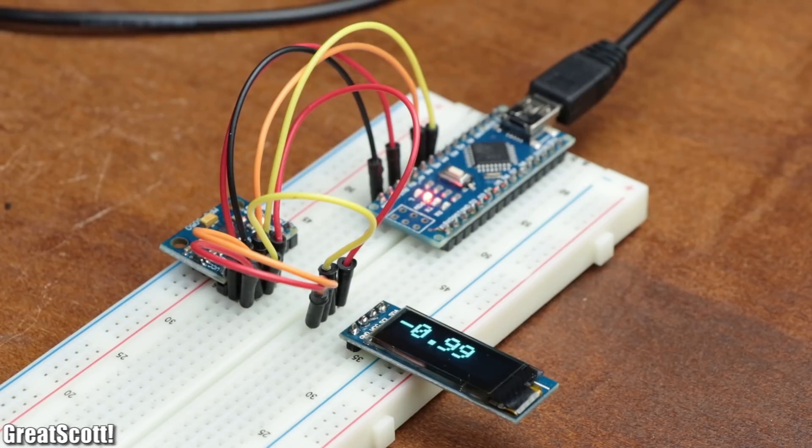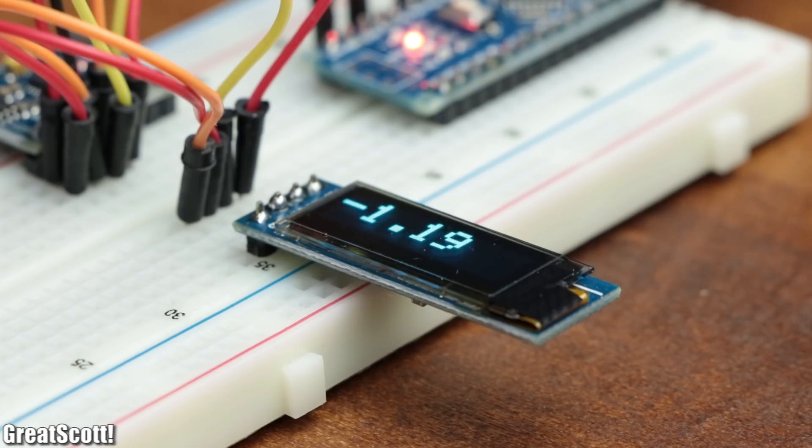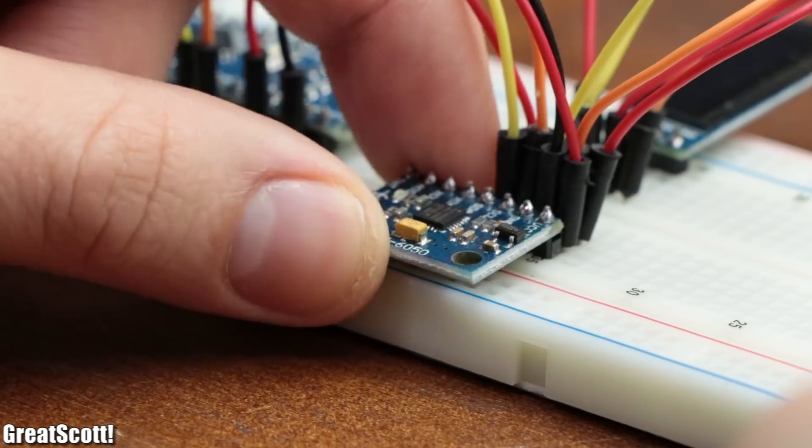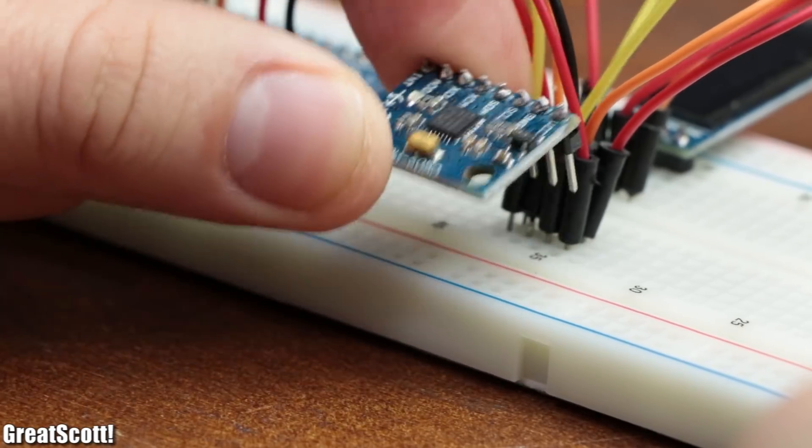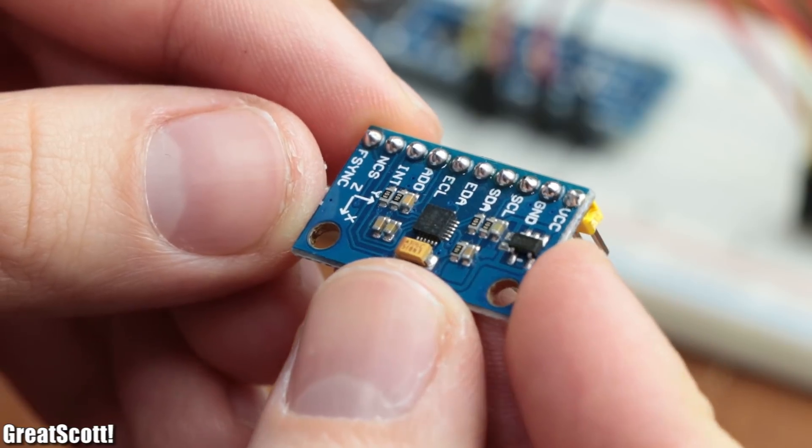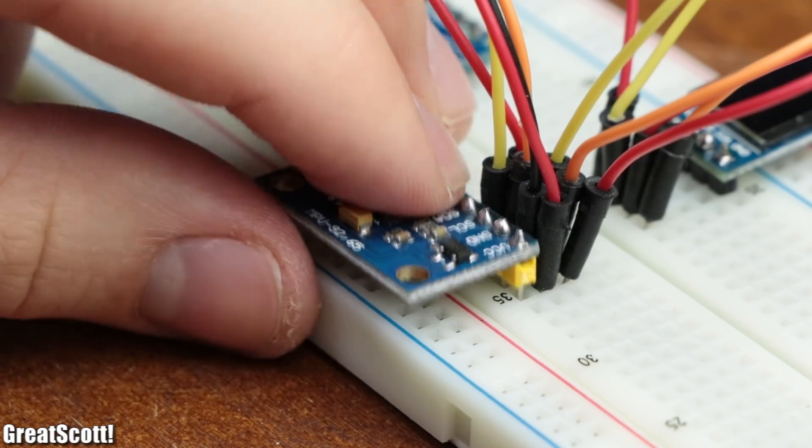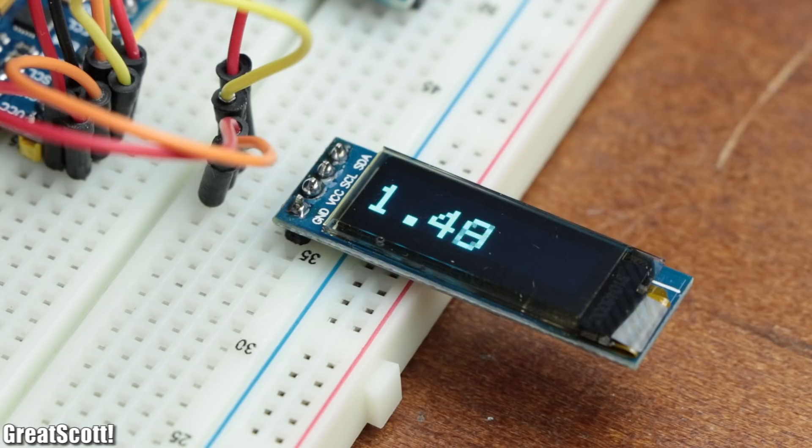As you can see here, even without moving the breadboard, the angle value jumps around 0.5 degrees, which is probably a noise problem. To decrease it, I tried another similar IC, the MPU 9250, which is slightly more expensive but reduces the noise down to around 0.2 degrees. Much better.